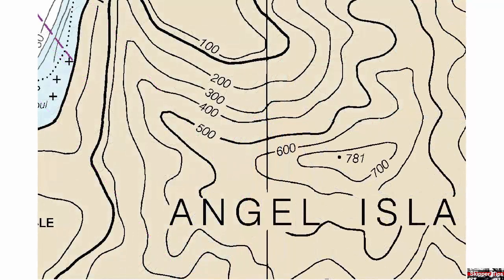Curved or wavy lines farther inland show high hills or mountain ranges. Cartographers print the height of the most prominent peaks that will be visible from sea. You could use these for navigation by shooting a bearing or taking a range on radar. Here you can see heights of 100, 200, 300, 400, 500, 600, and 700 feet.